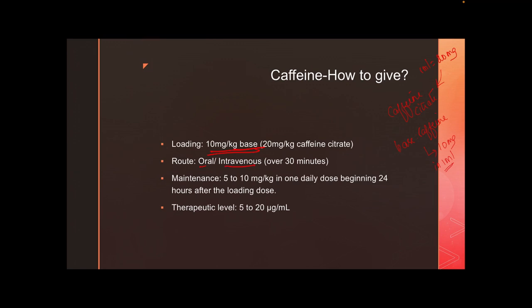Caffeine can be given orally or intravenously. Most sick babies start on intravenous. There is nearly 100 percent bioavailability orally, so it is a good drug to give orally as well. Intravenous should be given slowly. Start maintenance dose 24 hours after loading. Maintenance generally starts at 5 mg per kg base. The therapeutic level is wide: 5 to 20, with some studies saying up to 25 micrograms per mL, giving a good therapeutic window to escalate.